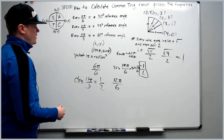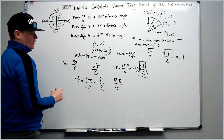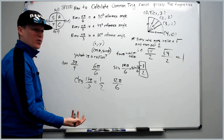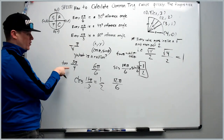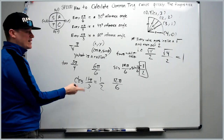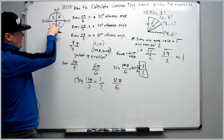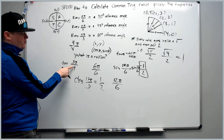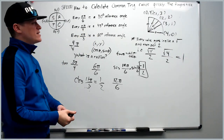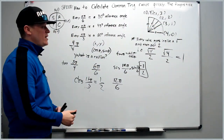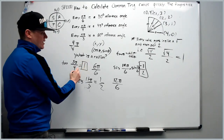What about the tangent of 5π/4? Think: 4π/4 is π and 8π/4 is 2π. Since 5π/4 is just past π, it's in the third quadrant — tangent's positive quadrant. Every n pi over 4 is a 45-degree reference angle, and at 45° sine equals cosine, so tangent equals 1. Third quadrant makes it positive, so the tangent of 5π/4 is +1.